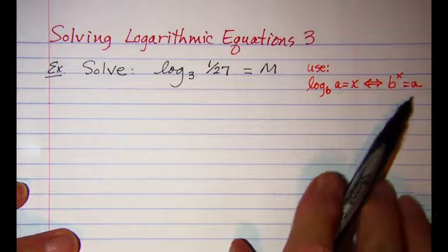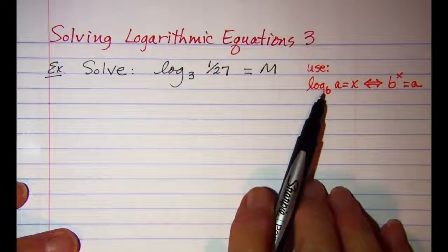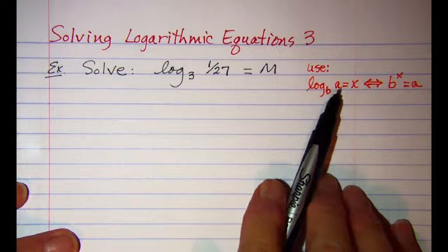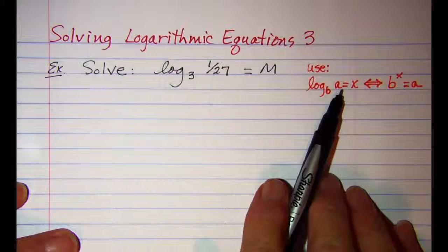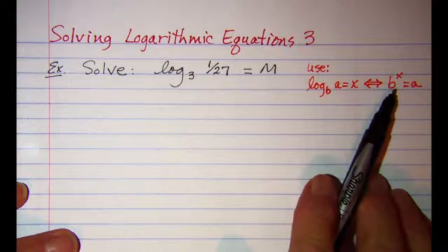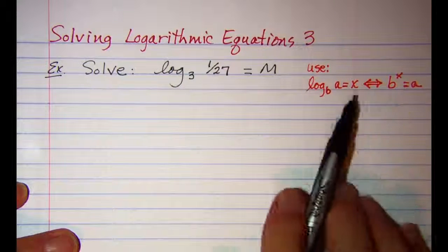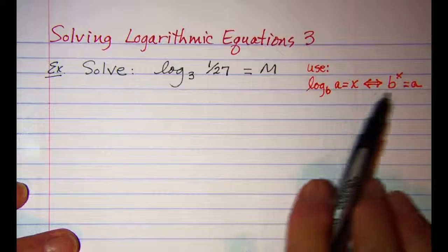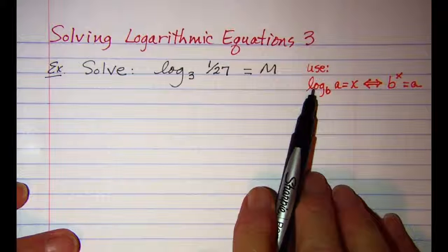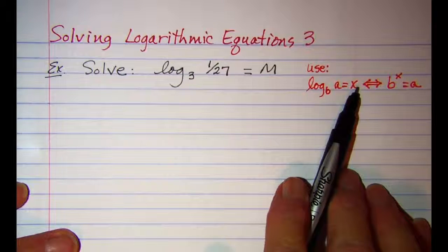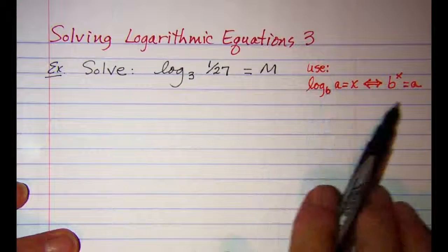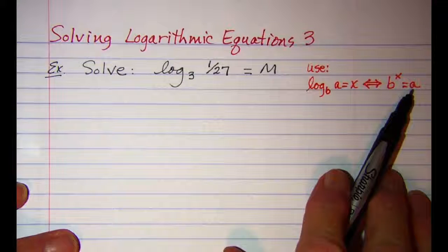We're going to use this rule: If we have a logarithm with base b and we're taking the log of the argument a and that gives us x, then that can be changed to this exponential. The base of the logarithm is the base of the exponential. A logarithm is an exponent, so this is my exponent, and then the argument is what my exponential is equal to.